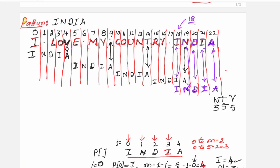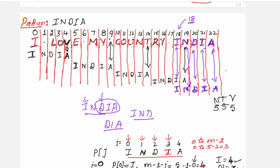As per the algorithm, it returns the location number where the pattern or string is found. Remember, the algorithm also searches for substrings — if you search for IND or DIA, it will find and return the location. If the pattern is not present at all, it returns minus 1.